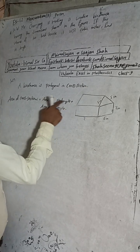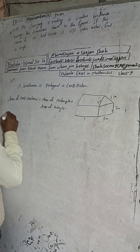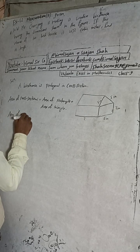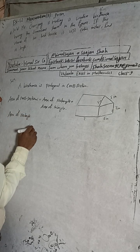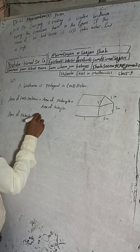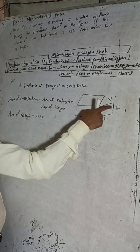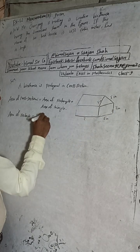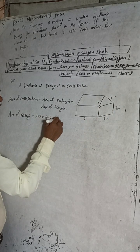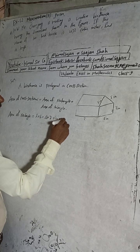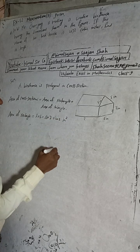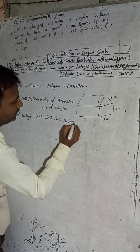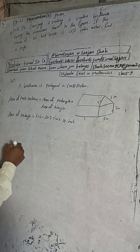Now we will find the area of the rectangle. Area of rectangle equals length times breadth. The length is 6 and the breadth is 7, so 6 times 7 equals 42 square inches.